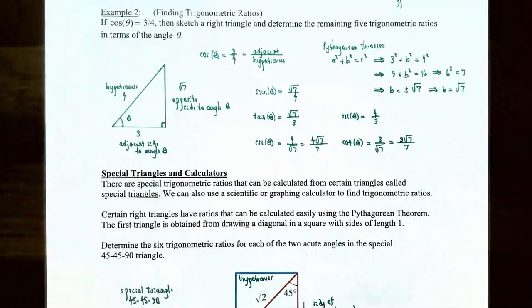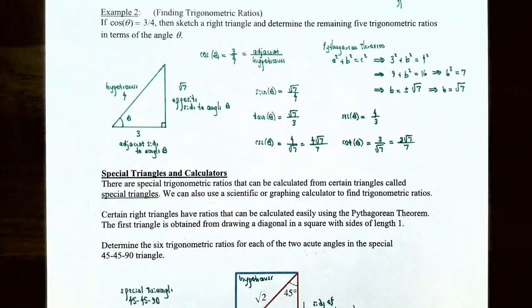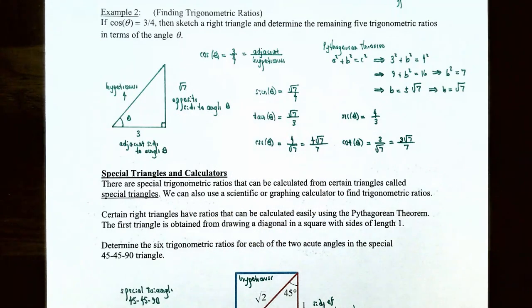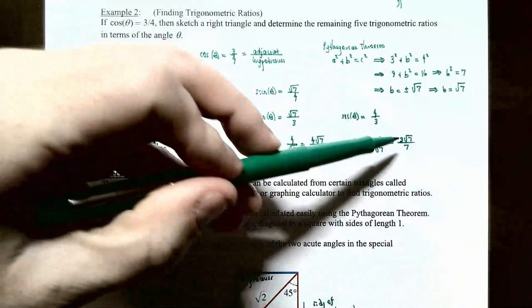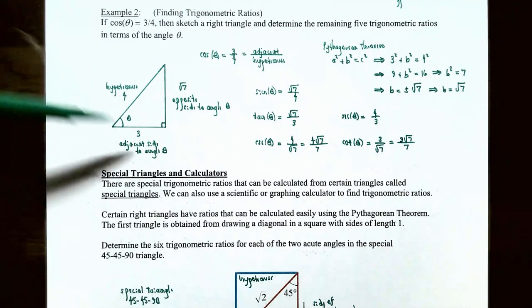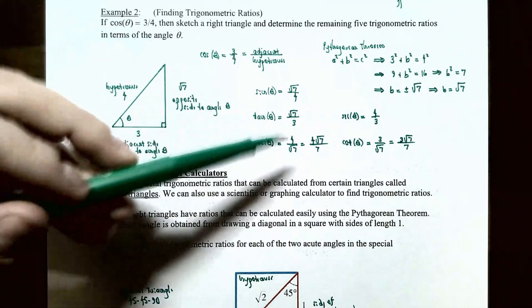Cotangent of theta is the reciprocal of tangent = 3/√7. Rationalizing the denominator gives 3√7/7. So if we're given one of the trigonometric ratios, we can construct the right triangle using the Pythagorean theorem to find the missing side, and then find the other five trigonometric ratios easily.